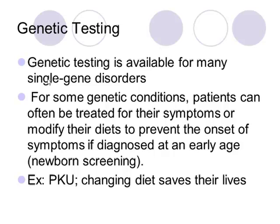One of the technologies we use to diagnose diseases is genetic testing. We have a lot of genetic tests for single gene disorders. In certain conditions such as PKU, if we can identify it soon enough through genetic testing, we can modify these children's diets so they don't ever show any symptoms — they simply stop eating phenylalanine. This is part of the newborn screening program here in Michigan.